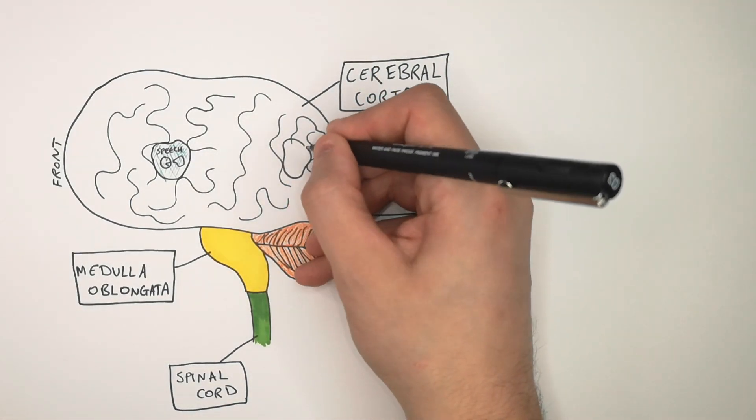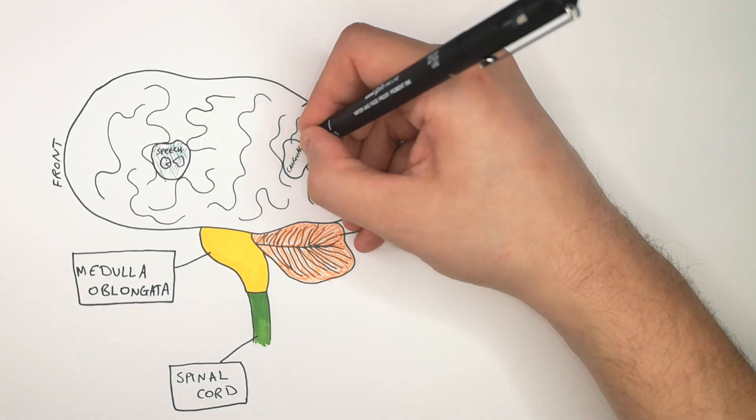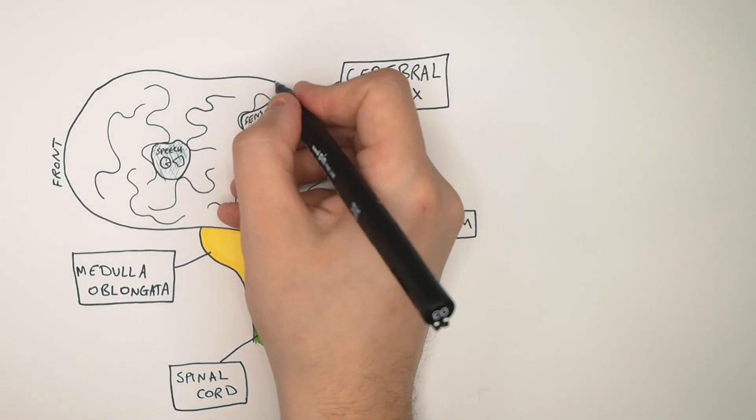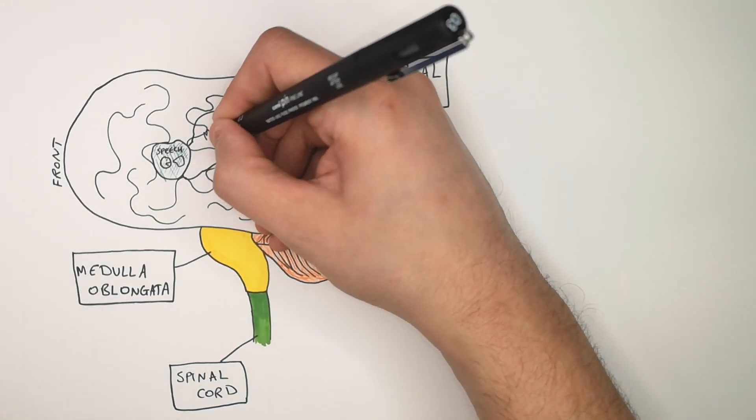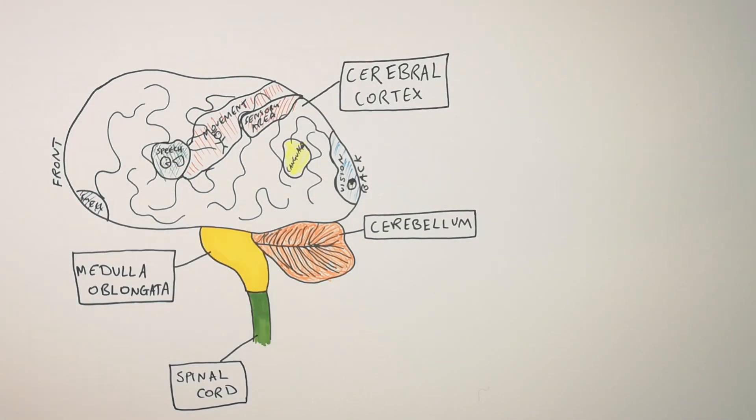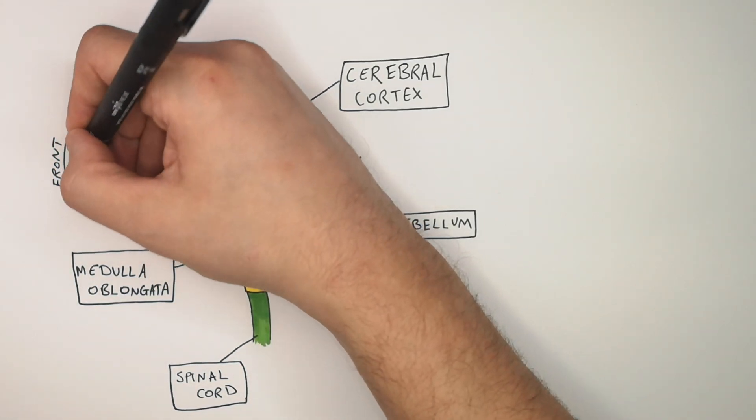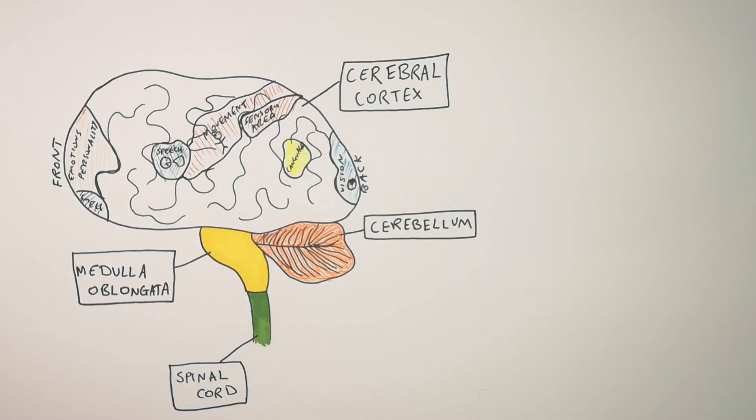The cerebral cortex also controls our language. This is our sensory area. The cerebral cortex controls our movement, our smell, and the front part of the cerebral cortex has been shown to control our emotions and our personality.